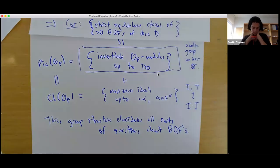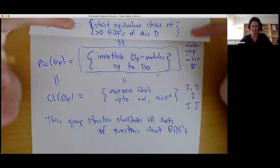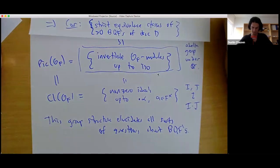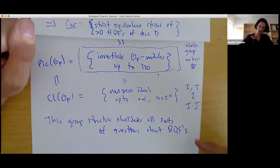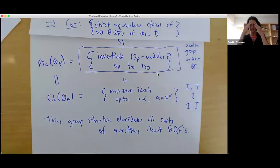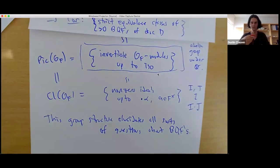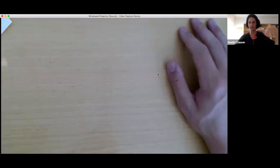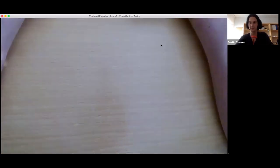A student notes that by what was proved a couple of lectures ago, the Picard group and the class group of these rings of integers are both finite because the set of strict equivalence classes is finite. Moreover, the class number equals the number of elements in the Picard group. There's also the abstract fact about Dedekind domains: when the class number equals one, every ideal is principal, which is when unique prime factorization of ideals implies unique prime factorization of elements.